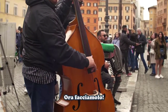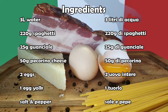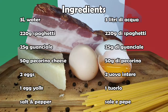Now let's make it! For this recipe you will need 3 liters of water, 220 grams of spaghetti, 25 grams of guanciale — you can use pancetta or fat bacon instead — 50 grams of pecorino cheese, 2 whole eggs, 1 egg yolk, salt and pepper.